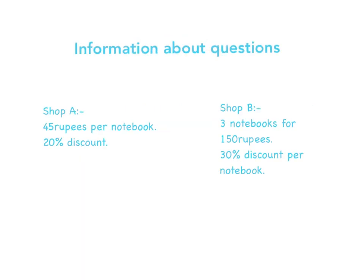Information about the question: Shop A — 45 rupees per notebook, 20% discount. Shop B — three notebooks for 150 rupees, 30% discount per notebook.